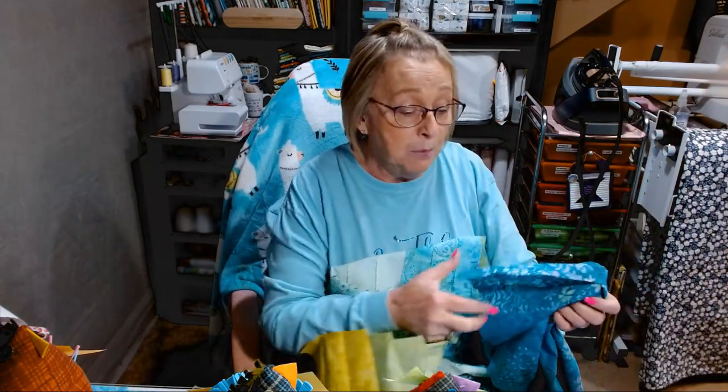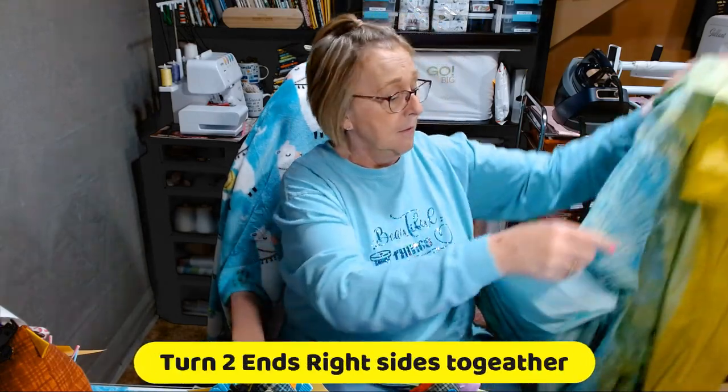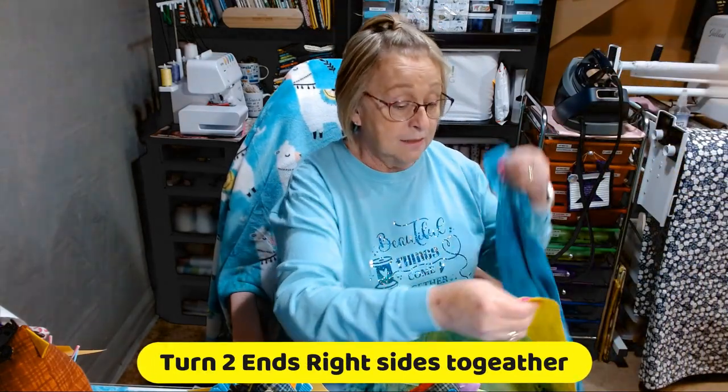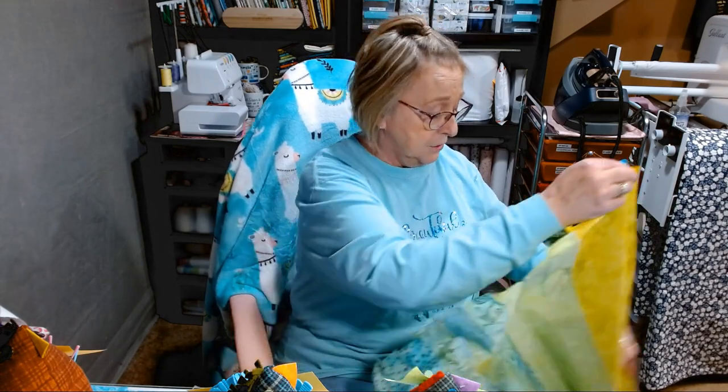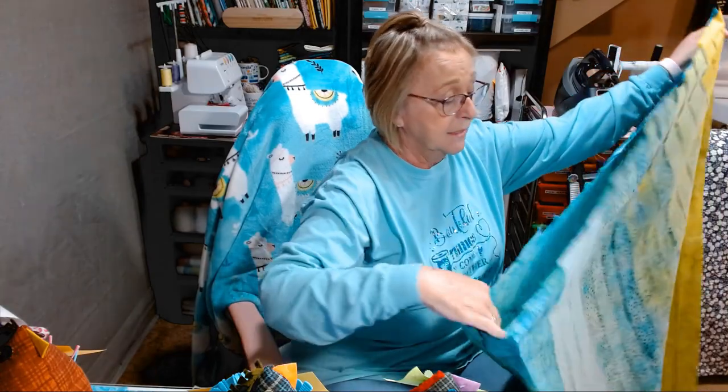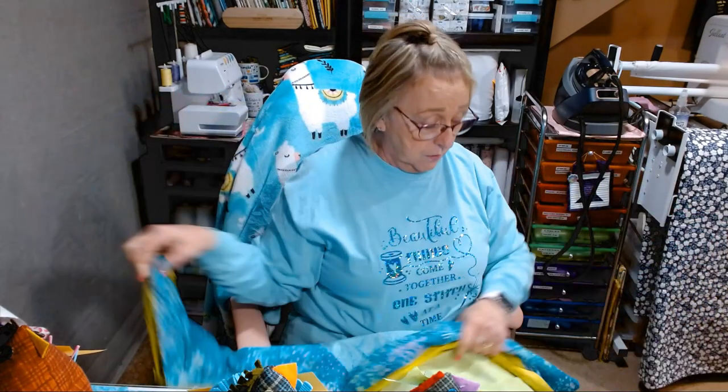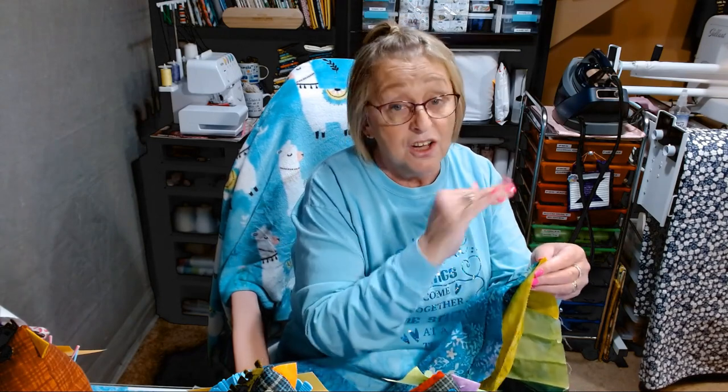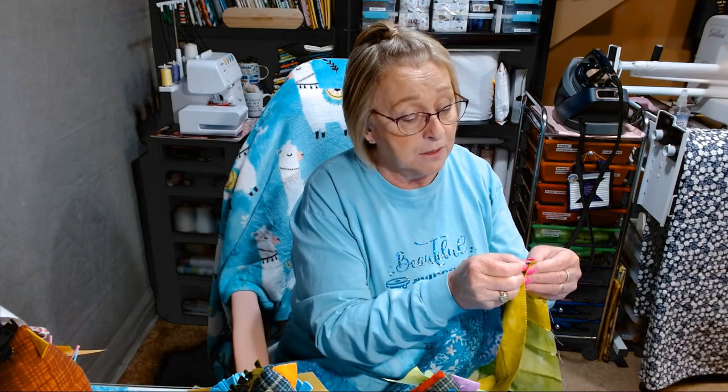So the next step that we have to do is basically you're going to take your two ends and you're going to turn it in right sides together. And you're just going to shake it out to make sure that everything's done. You did all of your ironing of all of your seams in the direction that they needed to go. And now we're going to line up these two corners.